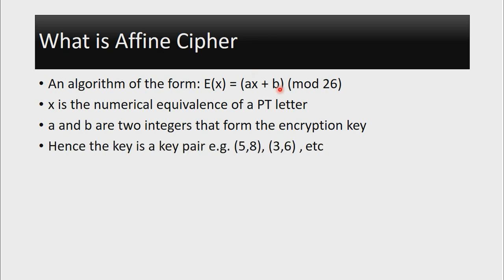So the key is a key pair. For example, we could have (5, 8) as a key pair or (3, 6) as our key pair. In the case that the key pair is (5, 8), it means that the encryption algorithm will be E(X) = 5X + 8 mod 26. So the Affine Cipher is just as simple as that.